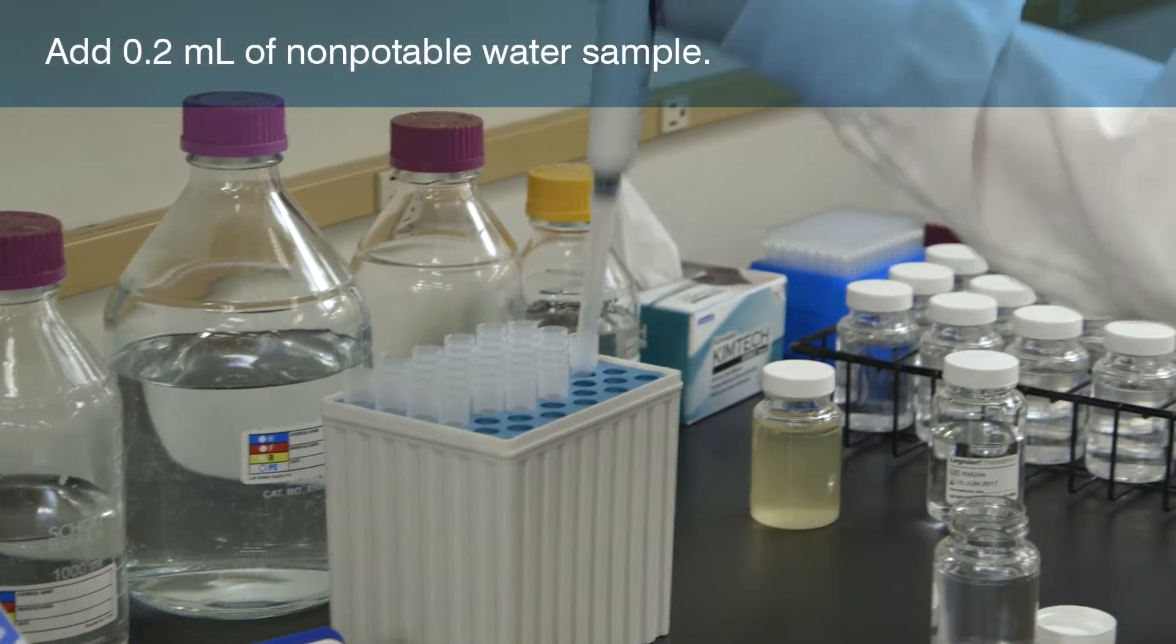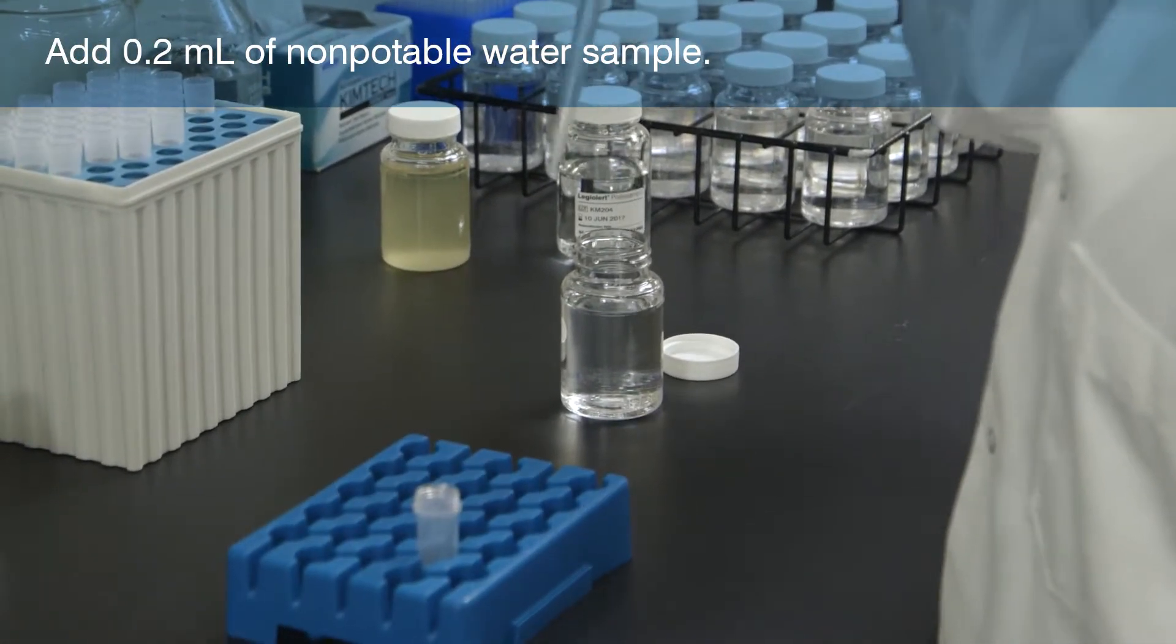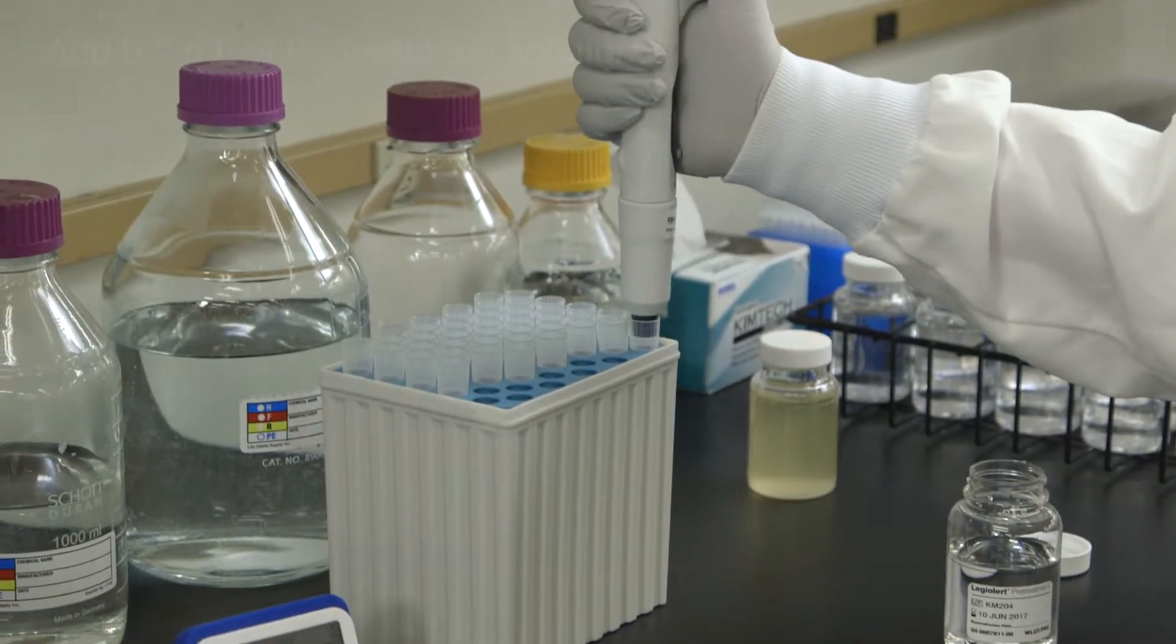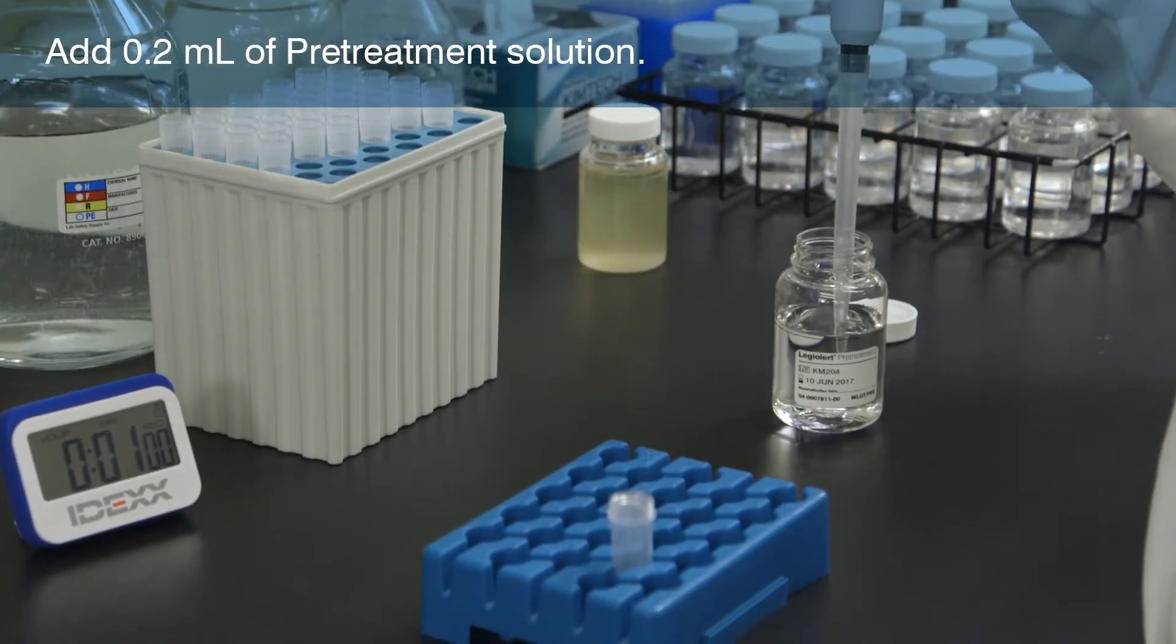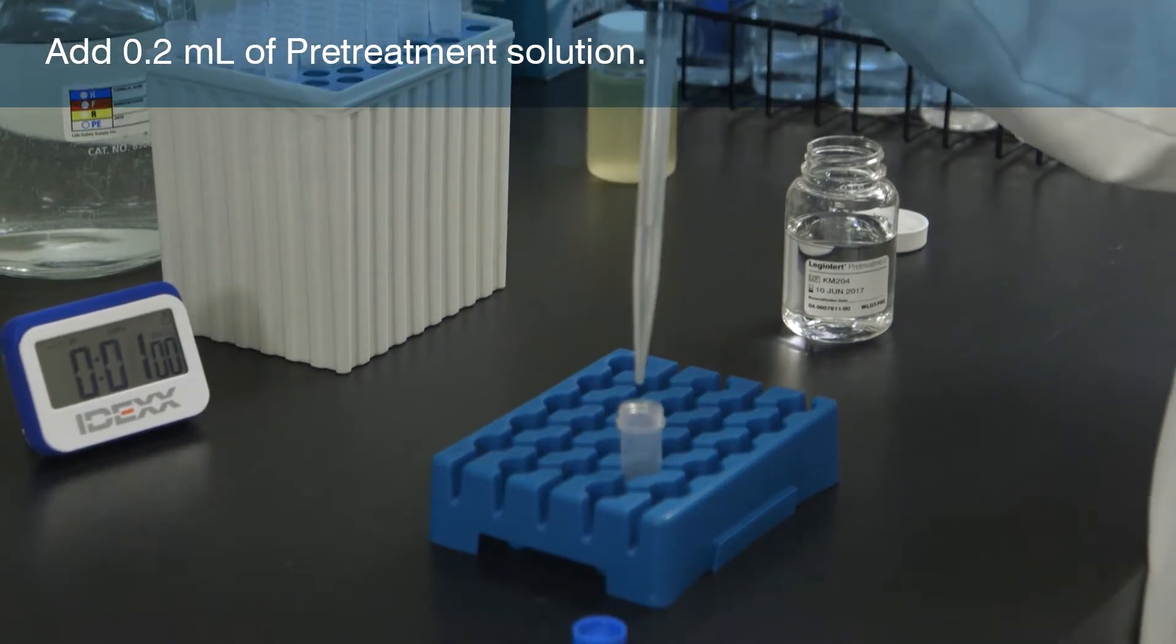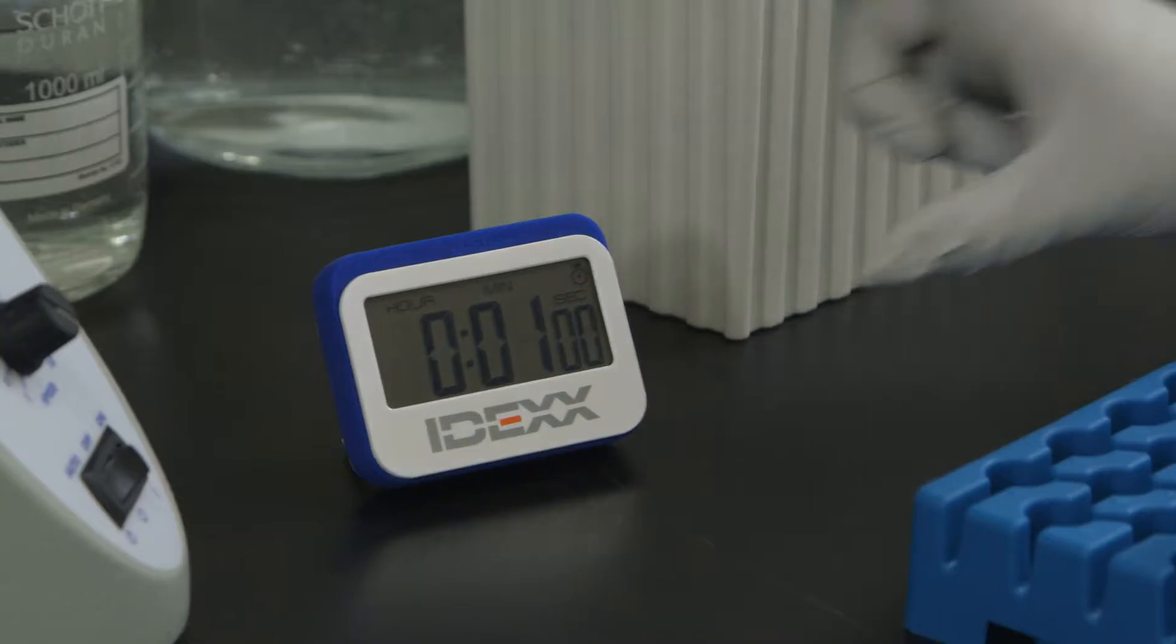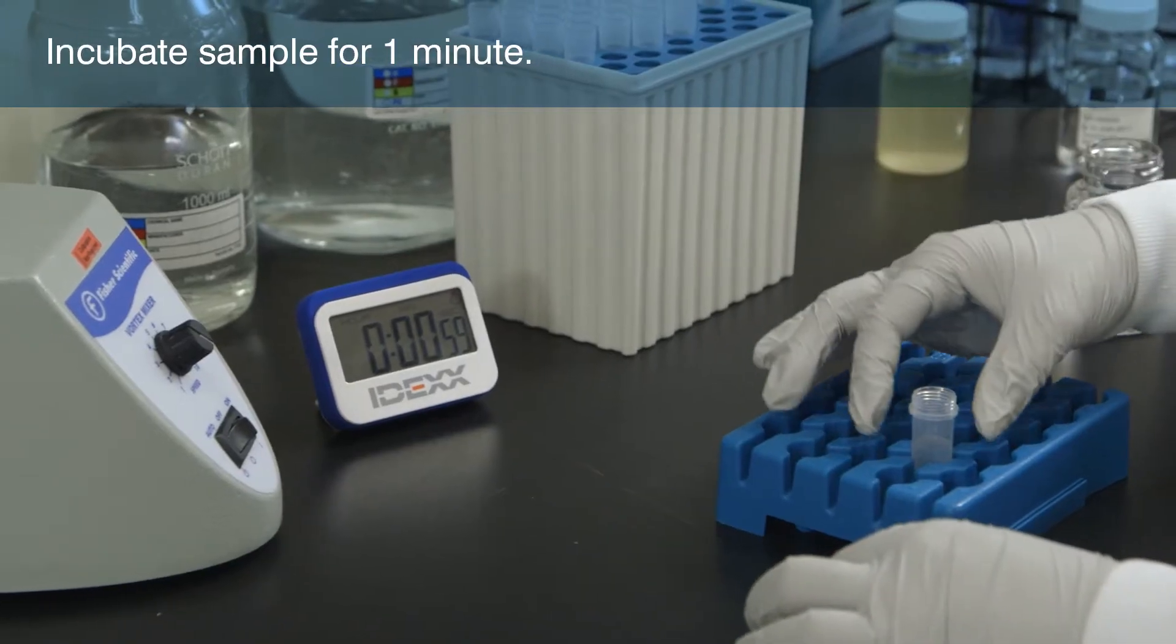Add 0.2 mL of non-potable water sample to a sterile microtube. Add 0.2 mL of reconstituted LEG-ALERT pretreatment to the same microtube. Start a 1-minute timer and then mix the contents thoroughly.